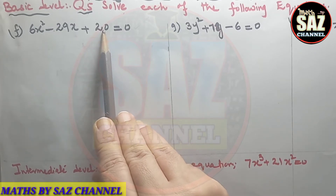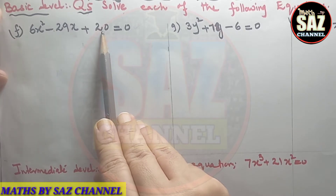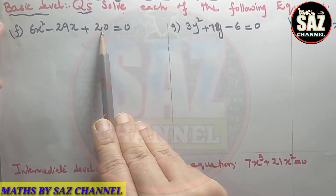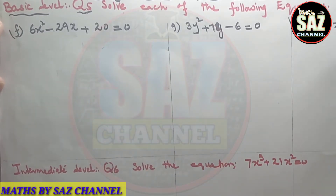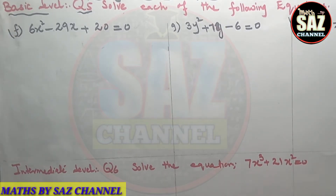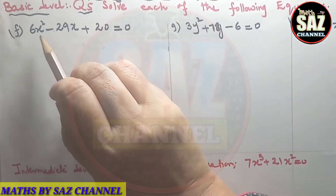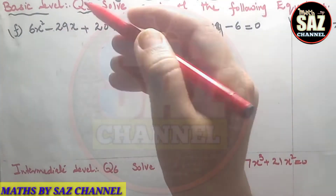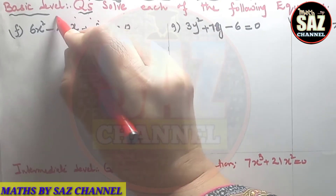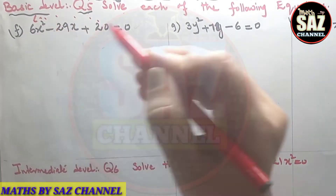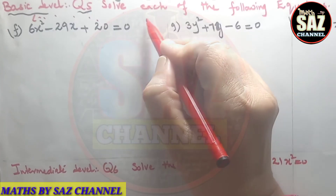So we have to apply the hit and trial method for the solution of this equation. We have discussed this method in detail — if you find any difficulty, I'll give the link in the description box so you can watch the lesson there for better understanding. The first part is 6x² - 29x + 20 = 0. Multiply the constant with the coefficient of the term having power 2: that is 20 multiplied by 6, which gives the product 120.